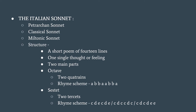The Petrarchan sonnet is a short form of 14 lines expressing one single thought or feeling, consisting of two main parts. The first eight lines form the octave with the rhyme scheme ABBA ABBA. The last six lines form the sestet, which may have any one of the following rhyme schemes: CDECDE, CDCCDC, or CDCDEE.